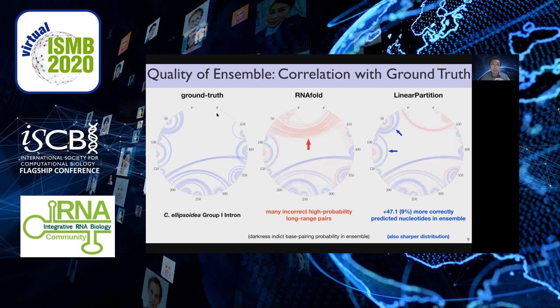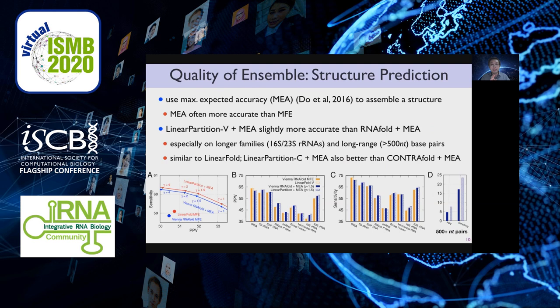Looking at specific pairs, the ground truth distribution compared to RNAfold shows a lot of incorrect false positives — long-distance false positives in red — whereas ours recovers the correct ones in blue with much fewer wrong ones. For this particular example of a group I intron, we have 47 more correctly paired nucleotides, or about 9% more. We also produce a sharper, lower-entropy distribution, which leads to higher accuracy structure predictions using the MEA algorithm. LinearPartition V plus MEA is slightly more accurate than RNAfold plus MEA, and this advantage is more pronounced on longer families — 16S and 23S — and on long-range base pairs more than 500 nucleotides apart.